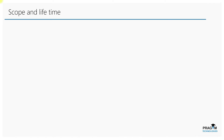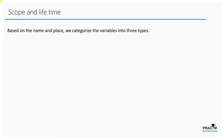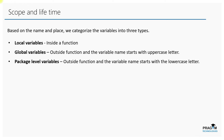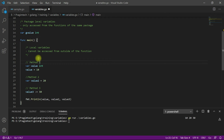Based on the name and the place where we declare a variable, we categorize variables into three types: local variables, global variables, and package-level variables. If a variable is declared inside a function, we call it a local variable. If it is declared outside a function and the variable name starts with an uppercase letter, we call it a global variable. If declared outside a function with a lowercase letter, it is a package-level variable.